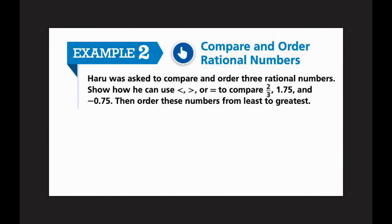Compare and order rational numbers: Haru was asked to compare and order three rational numbers. Show how he can use less than, greater than, or equal to, to compare two-thirds, one and seventy-five hundredths, and negative seventy-five hundredths. Two out of three are decimals, so instead of making the decimals into fractions, let's change two-thirds into a decimal. We'll do 2 divided by 3.